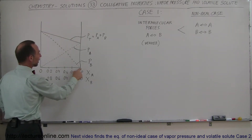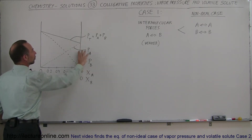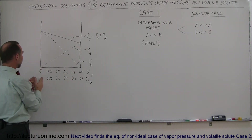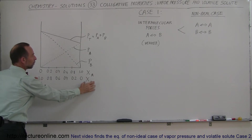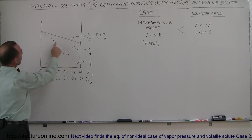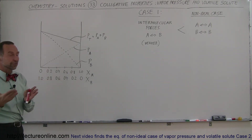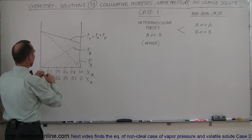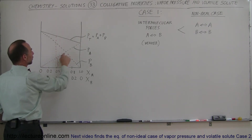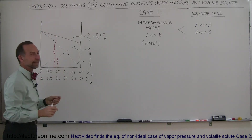For example, if we're on the side where the molar concentration of component A is 100% of the solution, then the vapor pressure of A will be the total vapor pressure. On the other side of the chart, where 100% of the solution is component B — so the molar concentration of B is 1 — the vapor pressure of B constitutes the total pressure. In between, the vapor pressure of A and vapor pressure of B add together to give the total vapor pressure. That's the ideal case.